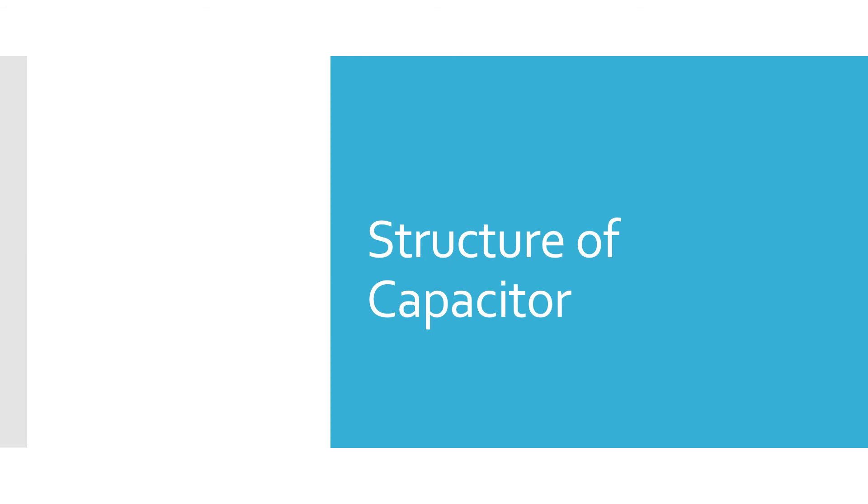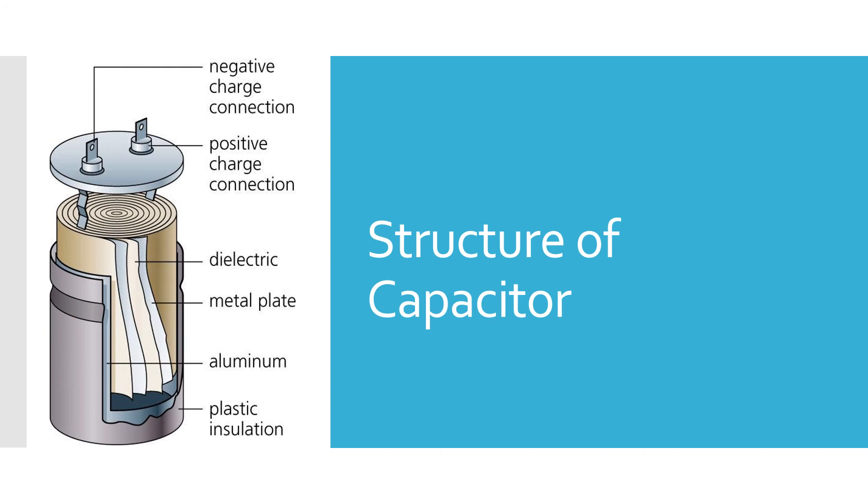Now let's see the structure of capacitor. This is the structure of capacitor. There are two connections: one is the positive connection and one is the negative connection. Inside the capacitor, there is a dielectric plate and a metal plate. Those plates are surrounded with aluminum, and the whole capacitor is covered using plastic insulation.